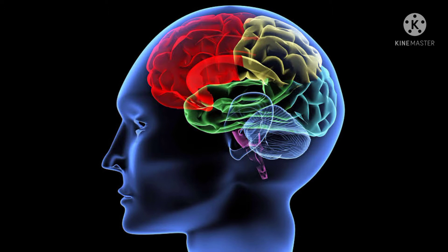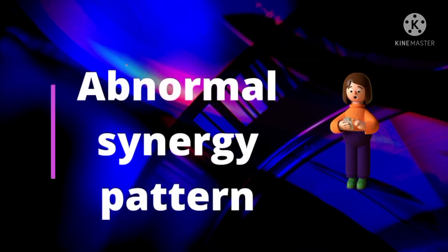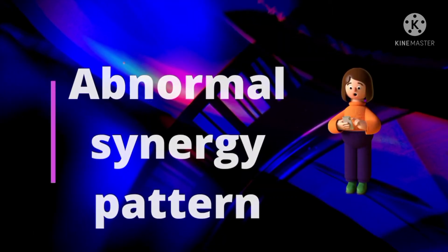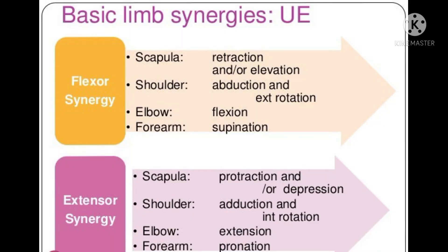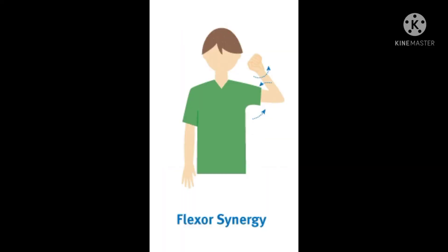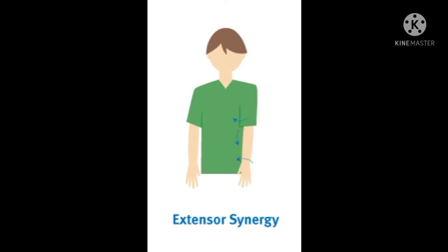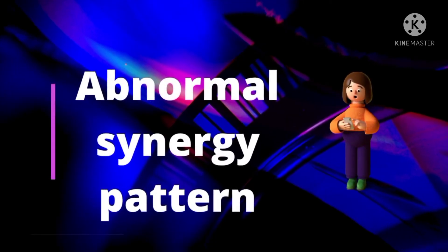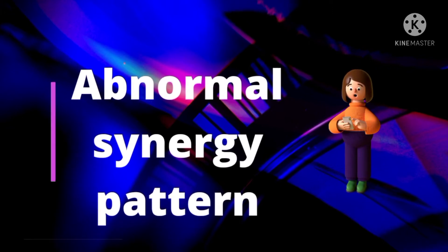These patterns of movement will be affected in case of a stroke, brain injury, or any central nervous system disorder. This leads to abnormal synergy patterns where the limb will be fixed in one synergy pattern — either flexor or extensor. Flexor synergy means the shoulder will be abducted and externally rotated, elbow flexed and supinated. Extensor synergy means abduction, internal rotation, elbow extension and pronation. The same abnormal synergy patterns are present for the lower limb as well.